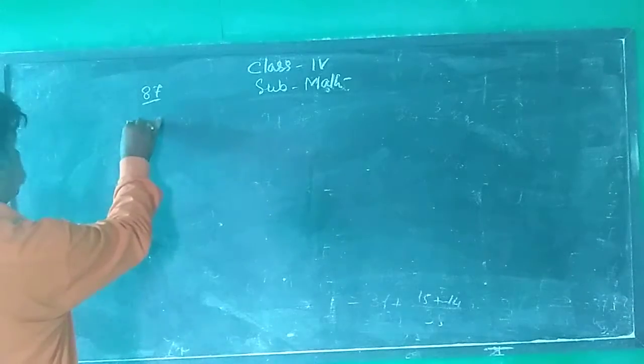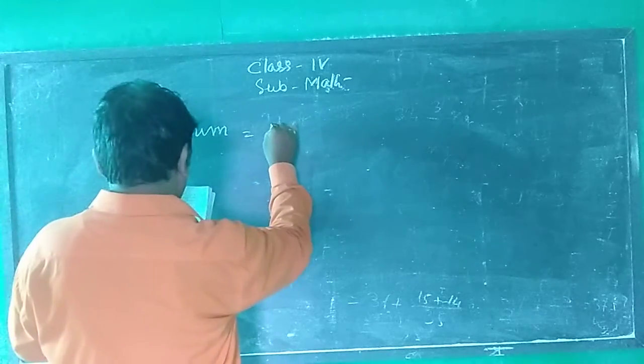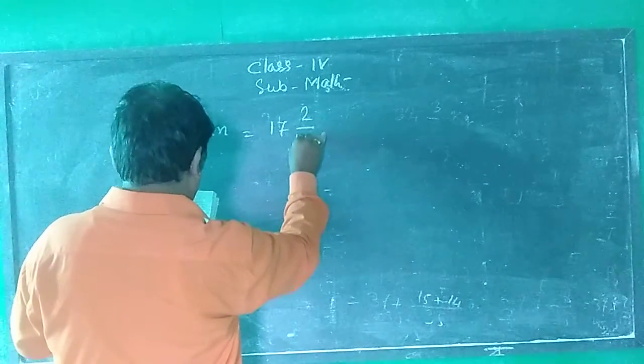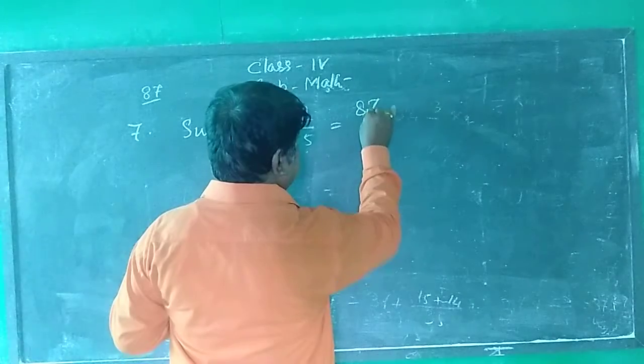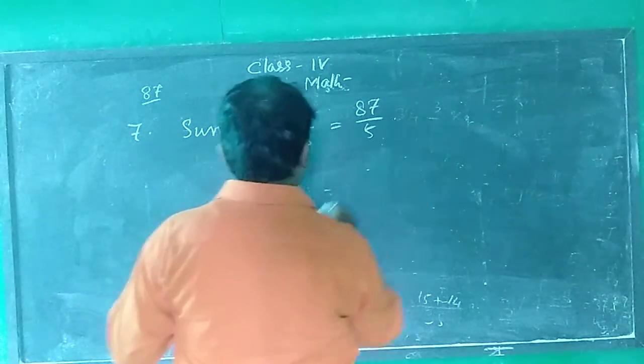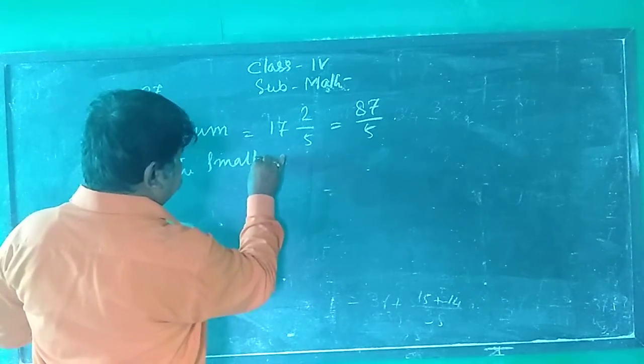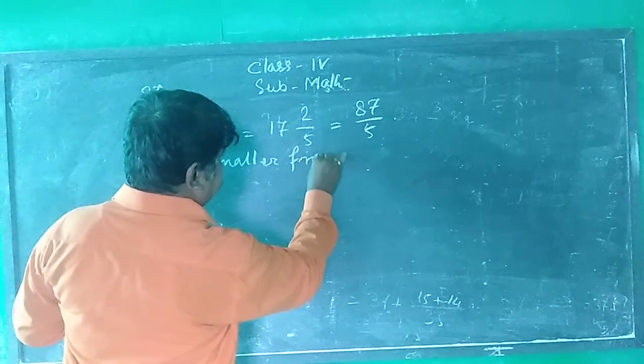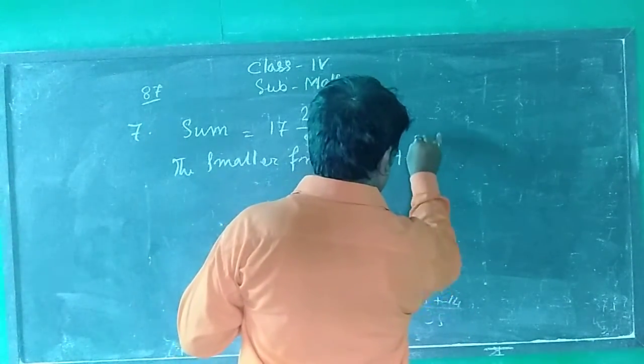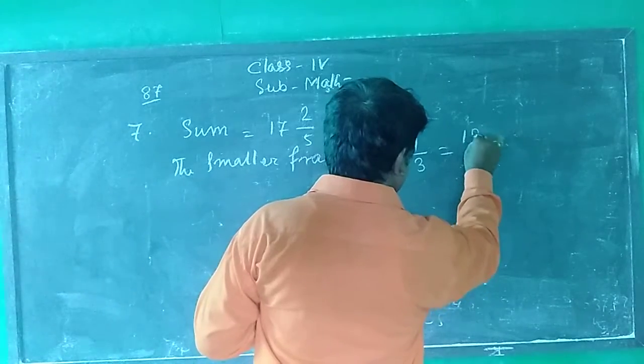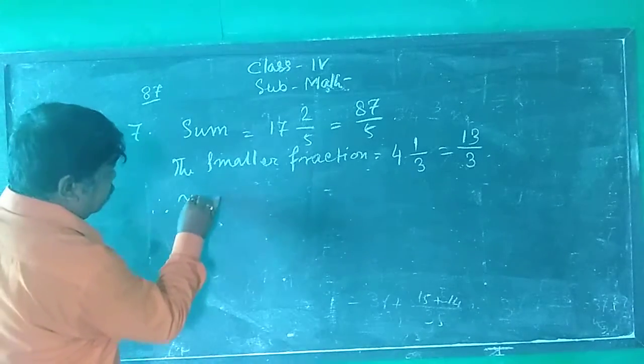Number 7. Sum equals to 17 whole 2 by 5 equals to 87 by 5. The smaller fraction equals to 4 whole 1 by 3 equals to 13 by 3. Therefore the bigger fraction...